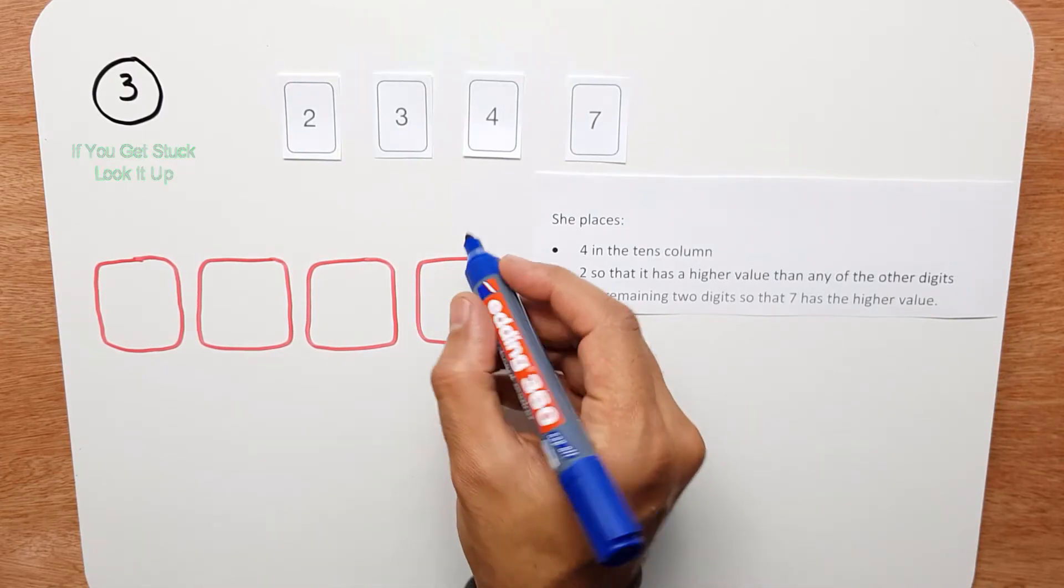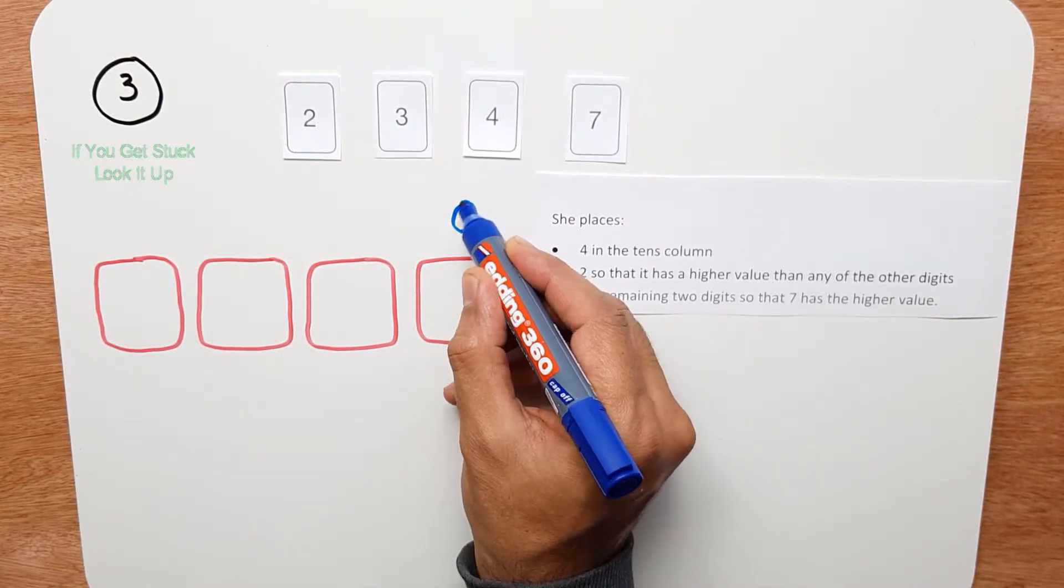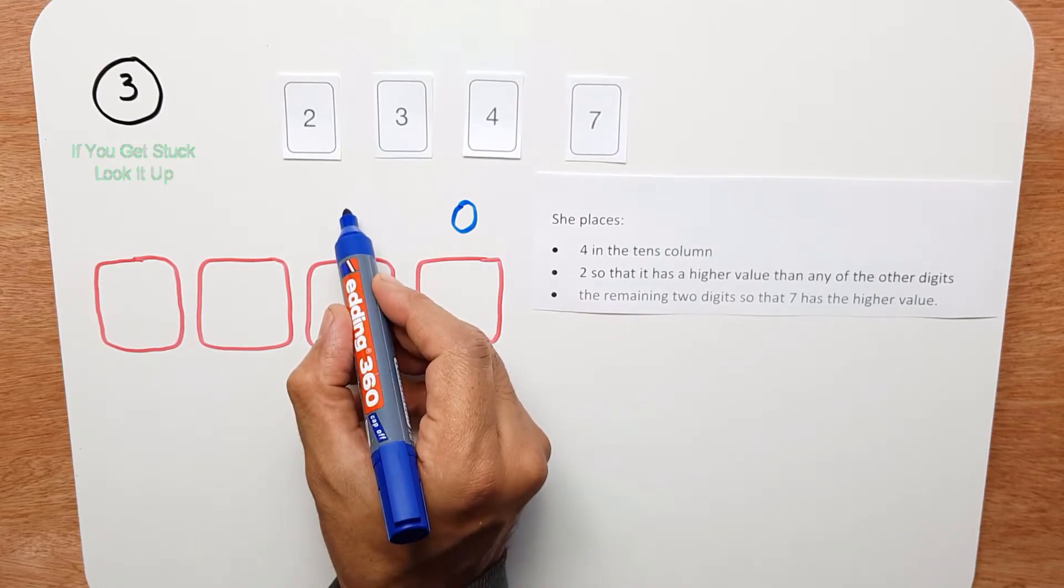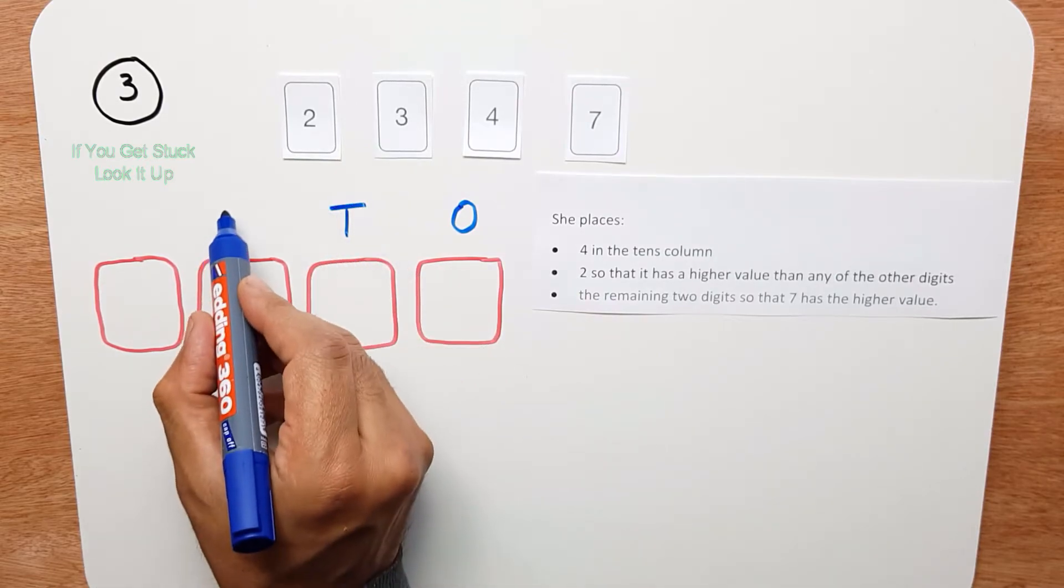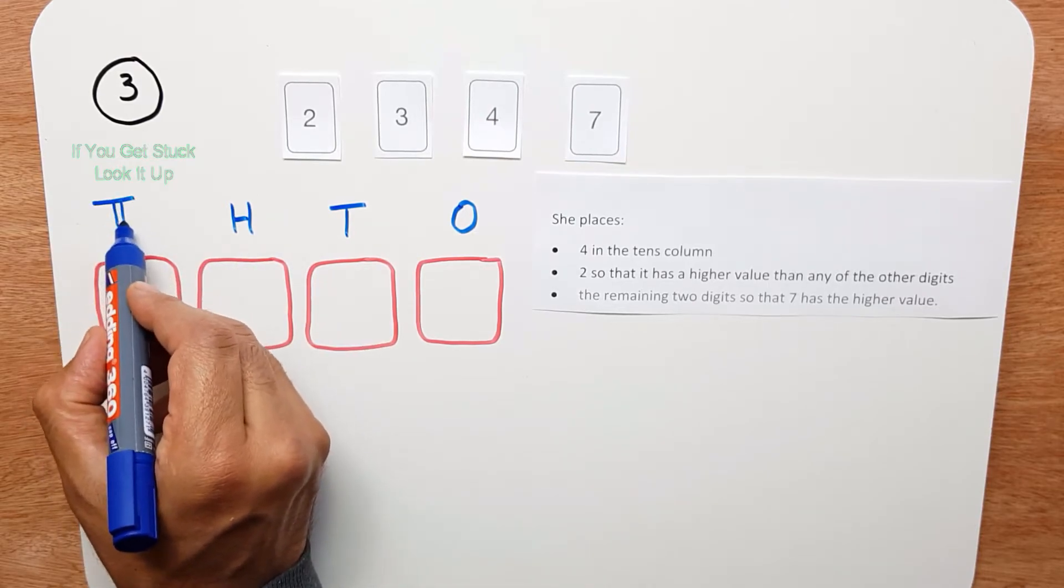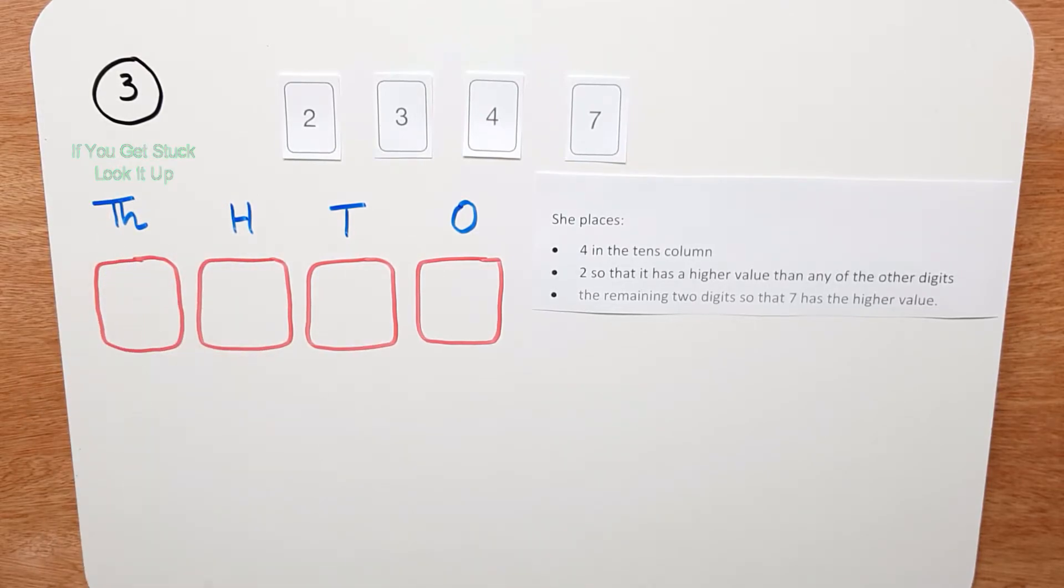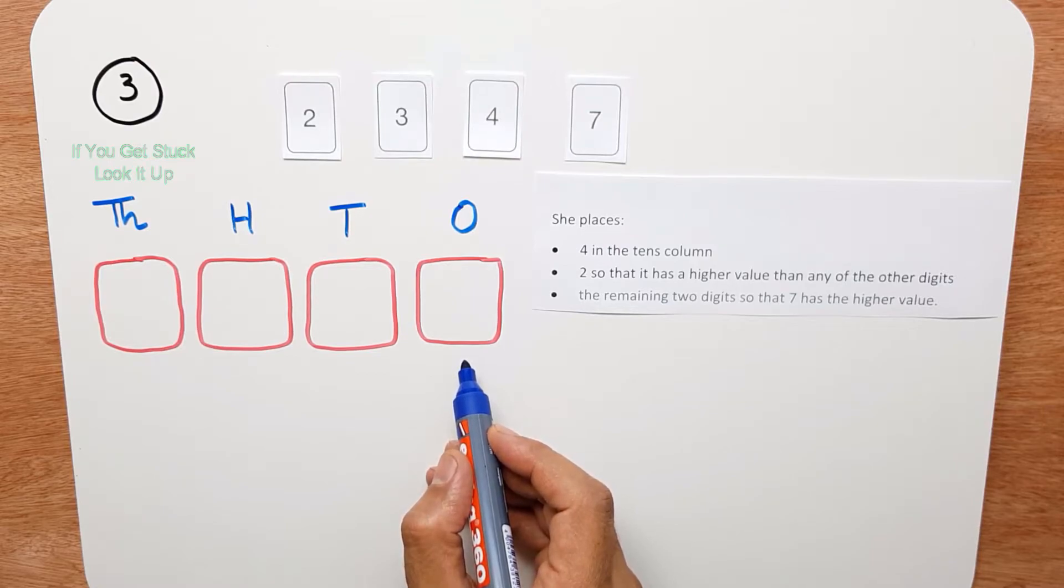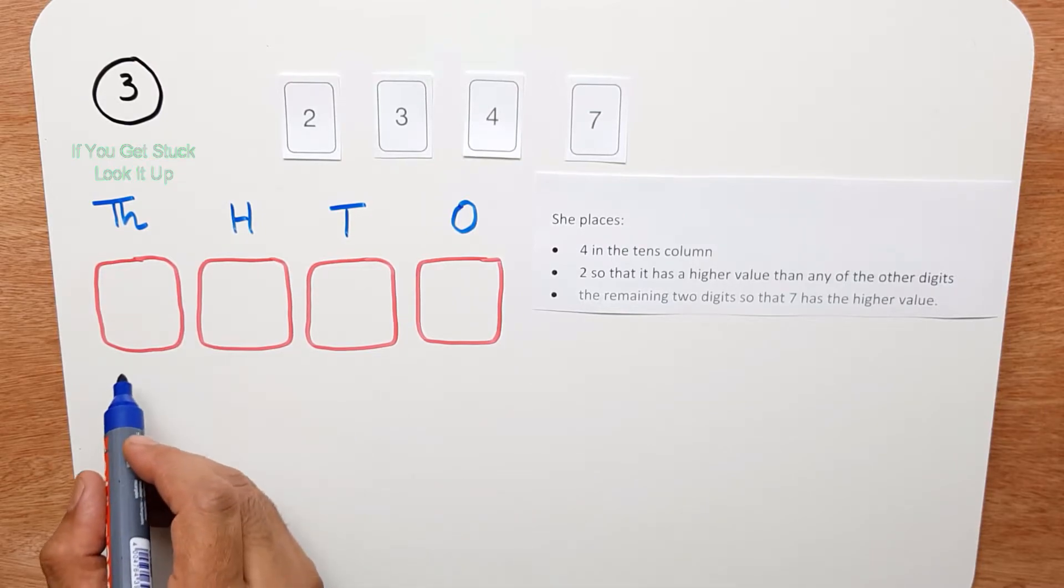The first digit is the ones or units digit, then the tens, then the hundreds, and then the thousands digit. The ones column has the smallest value and the thousands column has the highest value.